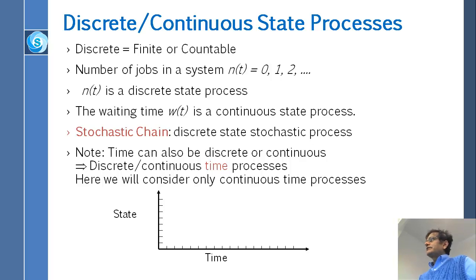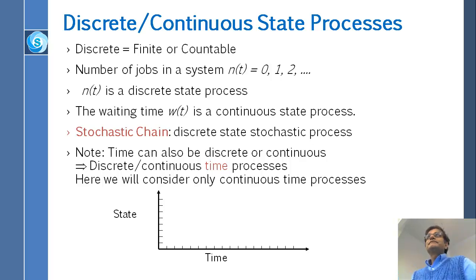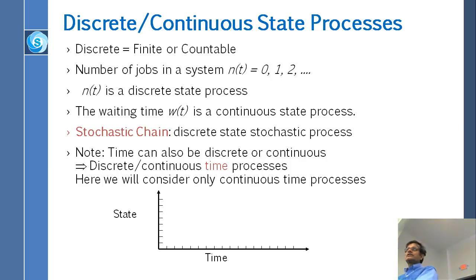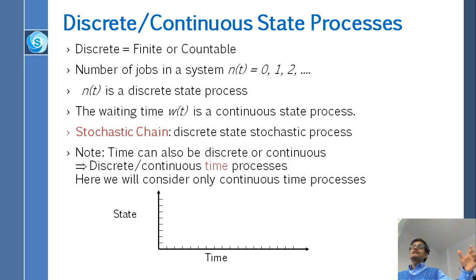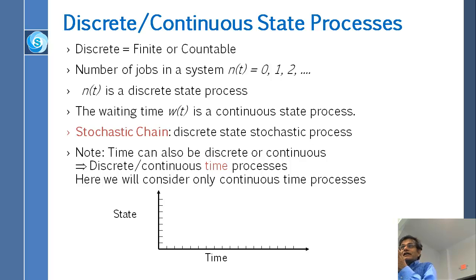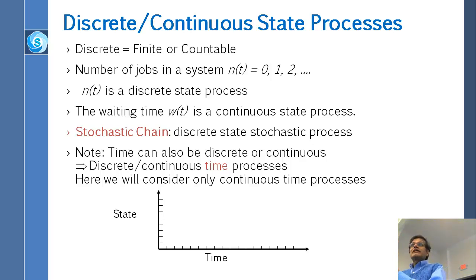Do not confuse discrete and continuous time processes with discrete and continuous state processes. State means the Y value; time is T. Time might be continuous in most systems, although in computers it is not strictly continuous — instructions are executed one at a time, so time moves in steps. However, if working on hourly or daily basis, time is almost continuous. If modeling at nanosecond granularity, you need to know that time cannot be 3.2 nanoseconds — it must be one clock cycle.